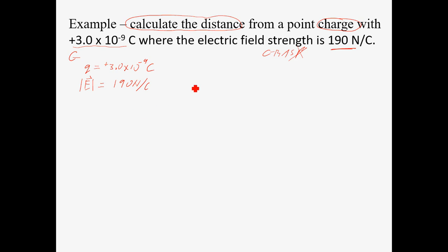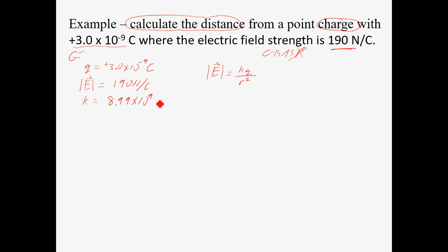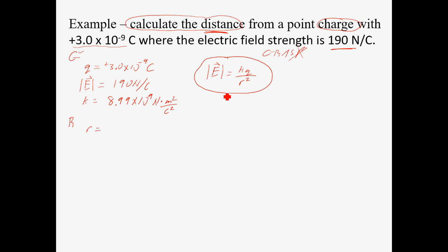Now write down the equation we're going to use: electric field strength equals Coulomb's constant times the charge divided by the distance between the charges squared. Even though it's not given in the problem, remember that Coulomb's constant is a known — it is given because it is in your data booklet. That's 8.99 times 10 to the 9 newtons per meter squared per coulomb squared. We need to do some rearranging of this equation because what we're actually trying to find is the distance r.